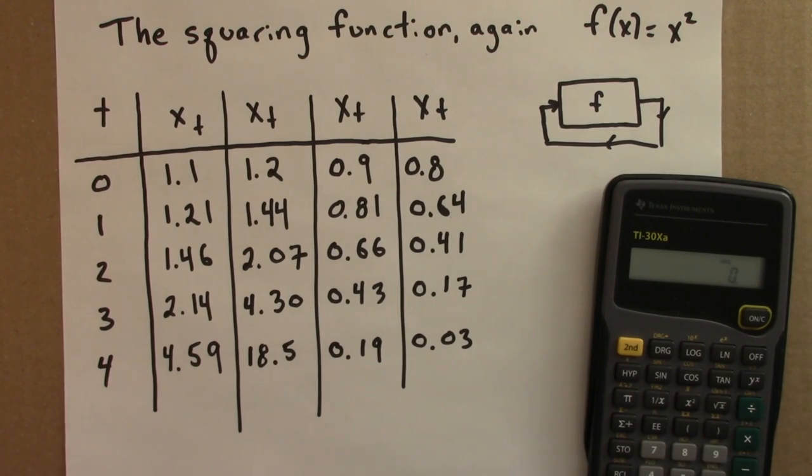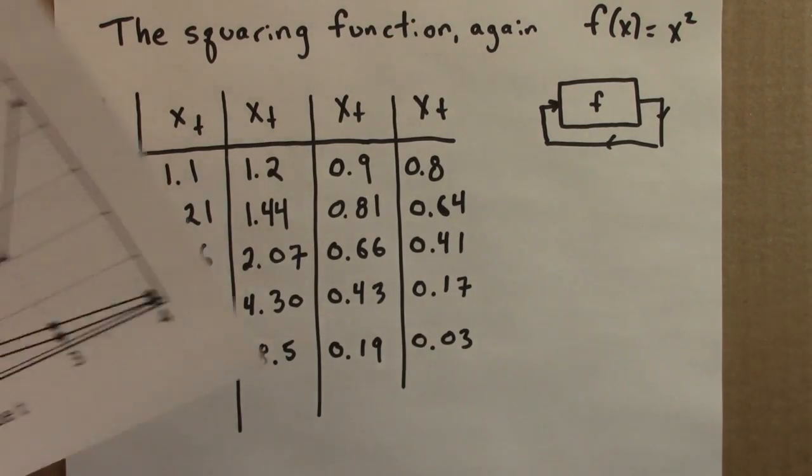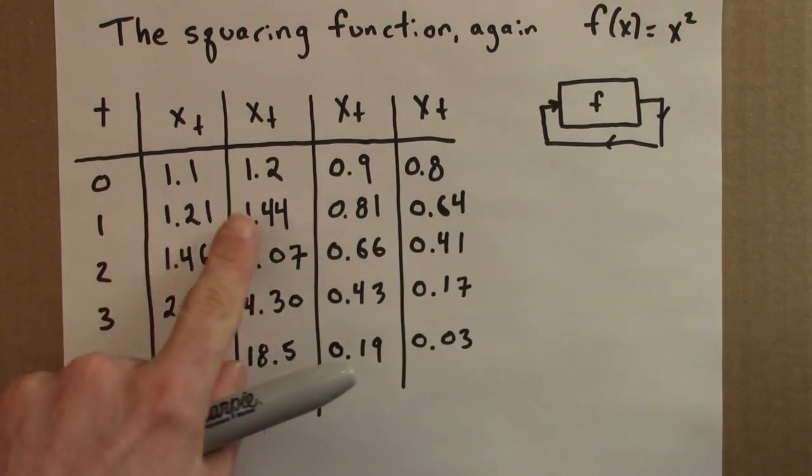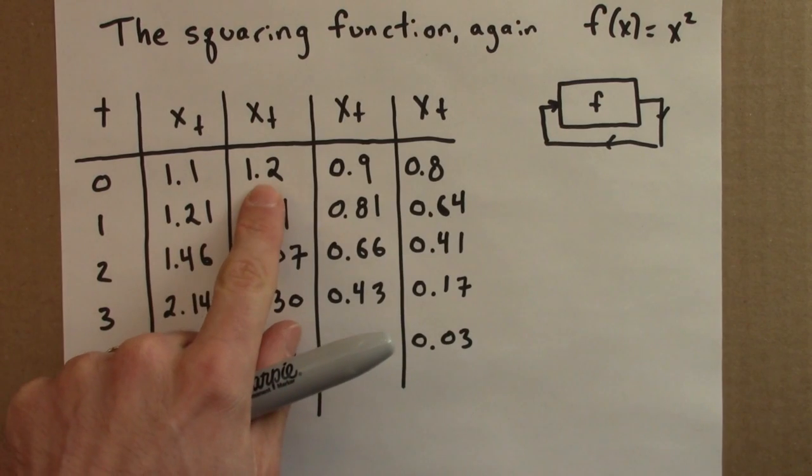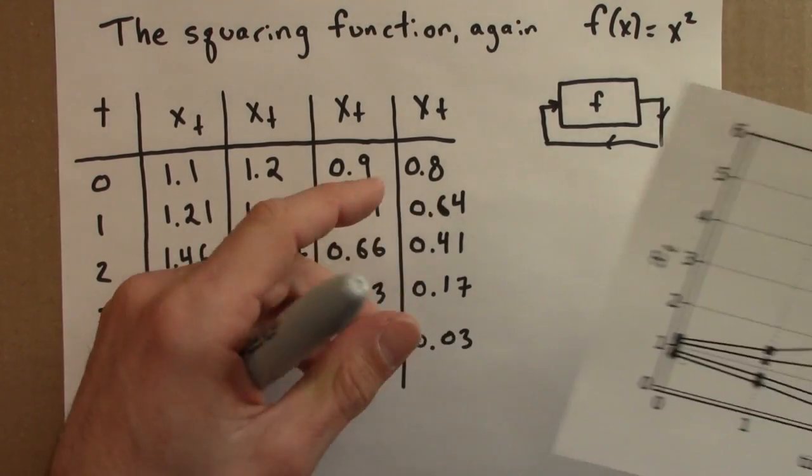First, let me plot the time series plots. Let me show you the time series plots for these four orbits. 1.1, 1.2, they get bigger. 0.9, 0.8, they get smaller. So here's the time series plot for that.